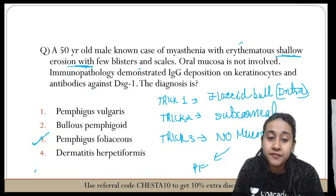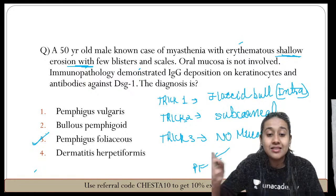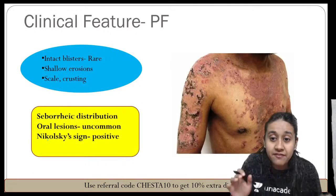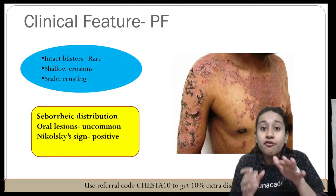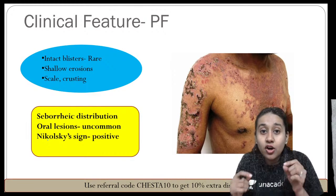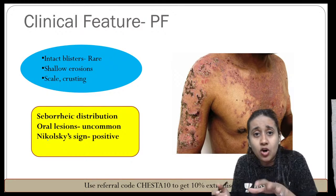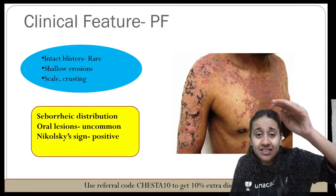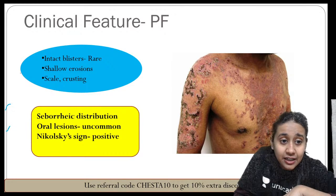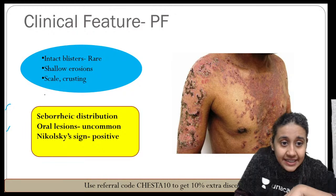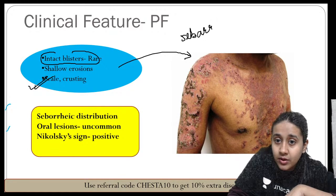Combining all three tricks, this becomes a case of pemphigus foliaceous. In pemphigus foliaceous, instead of intact bullae, you tend to see only erosions and crusting. This is because the level of split is very superficial — just below the stratum corneum — so it easily ruptures. Instead of intact bullae, you develop scaling and crusting mainly over the seborrheic distribution.